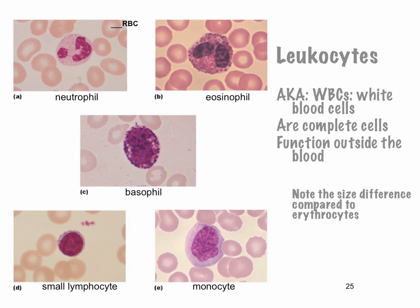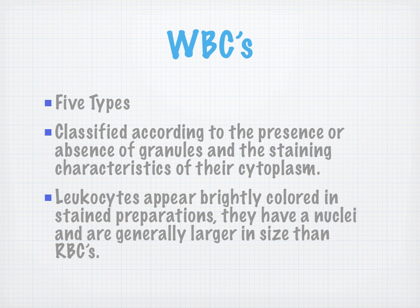Next, leukocytes — also known as white blood cells — are complete cells that function outside the blood. Note the size difference compared to erythrocytes. We have neutrophils, eosinophils, basophils, small lymphocytes, and monocytes — that is our leukocyte population, five different types of white blood cells. They are classified according to the presence or absence of granules and the staining characteristics of their cytoplasm. Leukocytes appear brightly colored in stained preparations, have nuclei, and are generally larger than red blood cells.